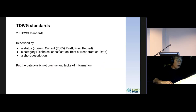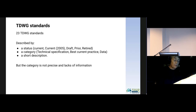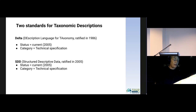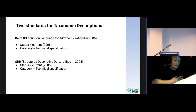So what about TDWG standards? The website of TDWG presents 23 TDWG standards described by a status, a category, and a short description. Of these 23 TDWG standards, two concern morphological descriptive data to express the description of taxa or specimens: DELTA, the Description Language for Taxonomy, and SDD, the Structured Descriptive Data. They have the same status and are classified in the same category: technical specification.